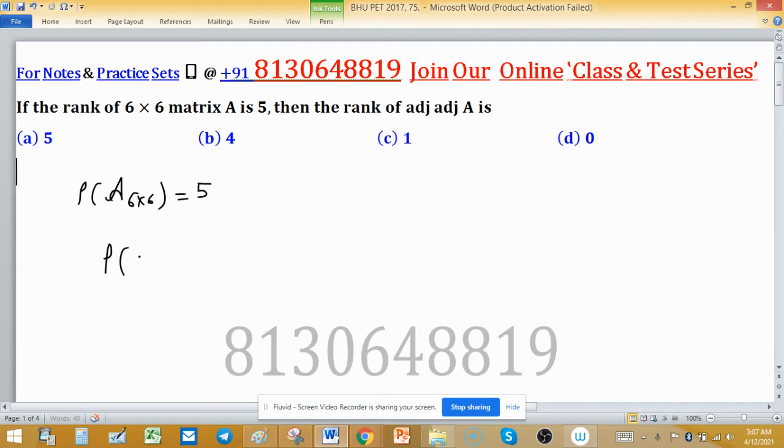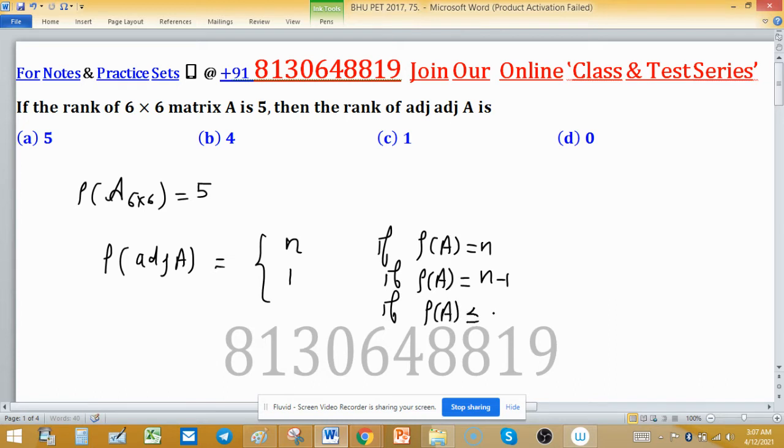Rank of adjoint A can be easily found if we know this result: If rank of A is n, then rank of adjoint A is n. If rank of A is n-1, then rank is 1. And if rank of A is less than or equal to n-2, then rank of adjoint A is zero.